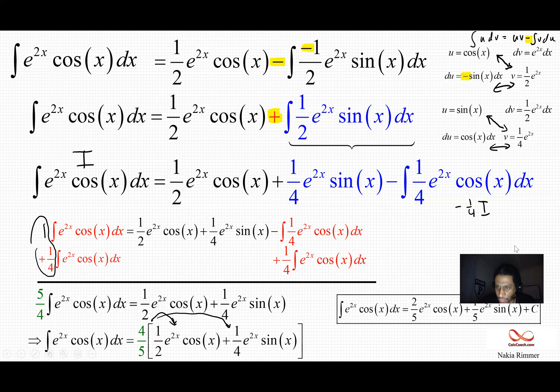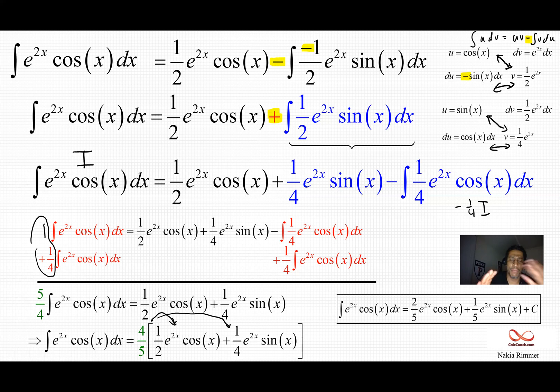So we have the integral of e to the 2x cosine x is equal to two fifths e to the 2x cosine x plus one fifth e to the 2x sine x. And then the plus c. So it's integration by parts. This will happen every time you have an exponential and a trig that is easily integrable. And it is your job to do it twice. Where doing it once just trades you in for the other trig function and doing it again gets you back to where you start at. At that point then it just becomes algebra.